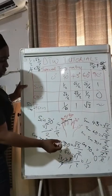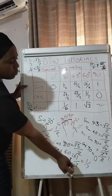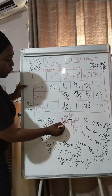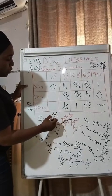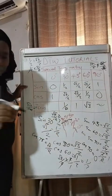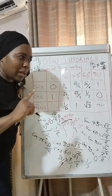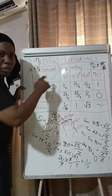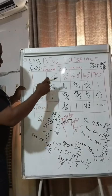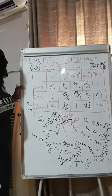For zero degrees: sin 0 = 0 because there are no fingers to that side. Cos 0 = √4/2 = 2/2 = 1. Make sure you know this — cos 0 is 1, not zero. Some people think cos 0 is zero, but it is not. Tan 0 = sin 0 / cos 0 = 0/1 = 0.